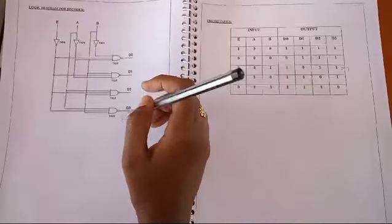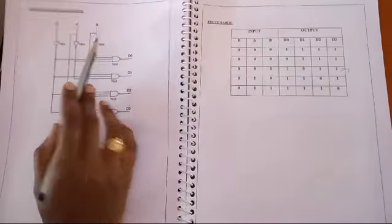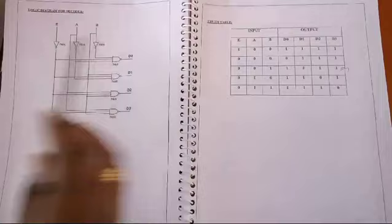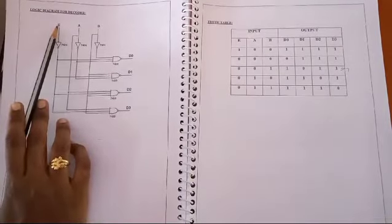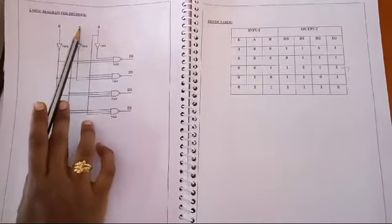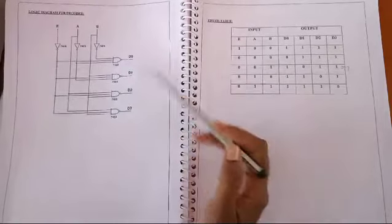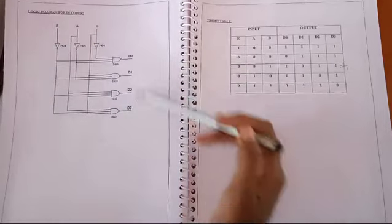There are 4 NAND gates with 3 inputs and 4 outputs. Output E indicates the enabled pin. A and B are input 1 and input 2. The outputs are D0, D1, D2, and D3.